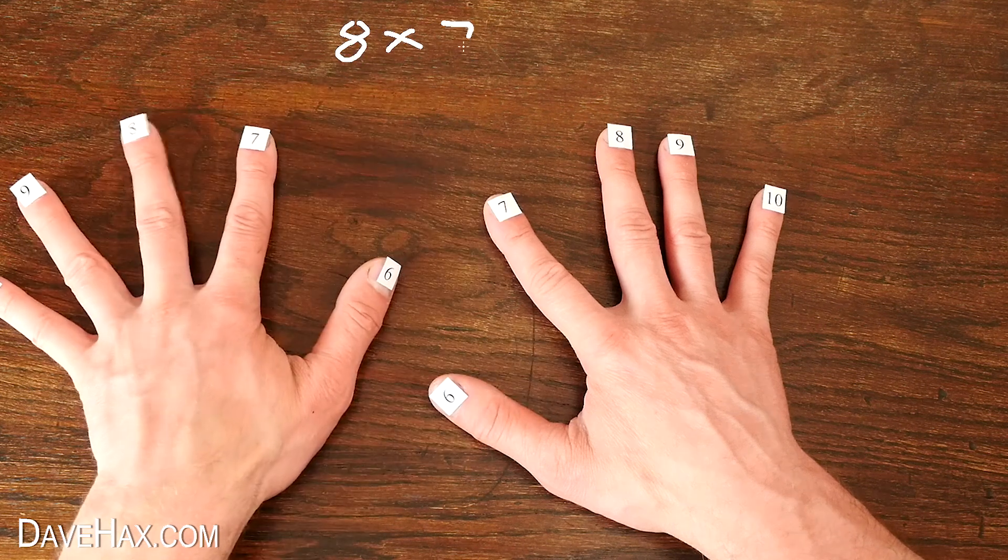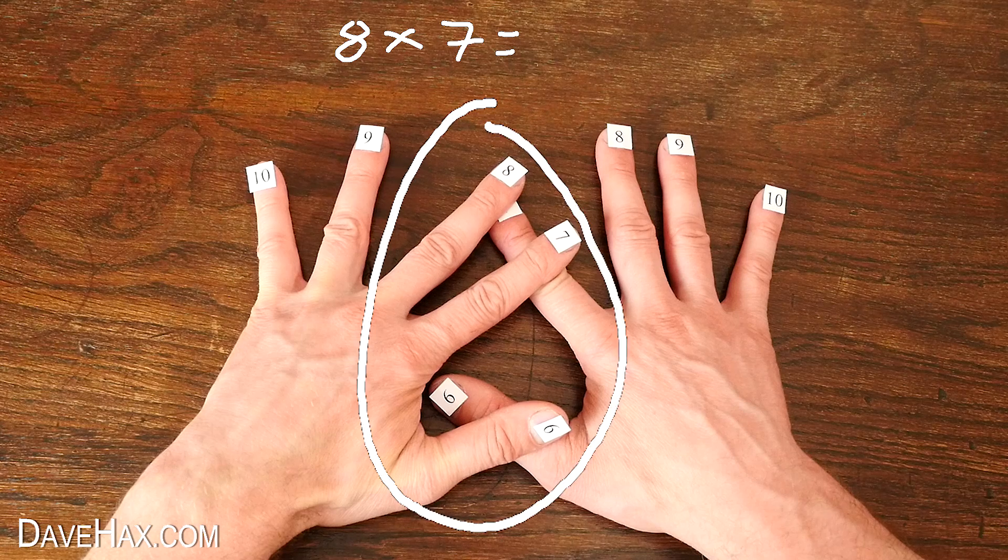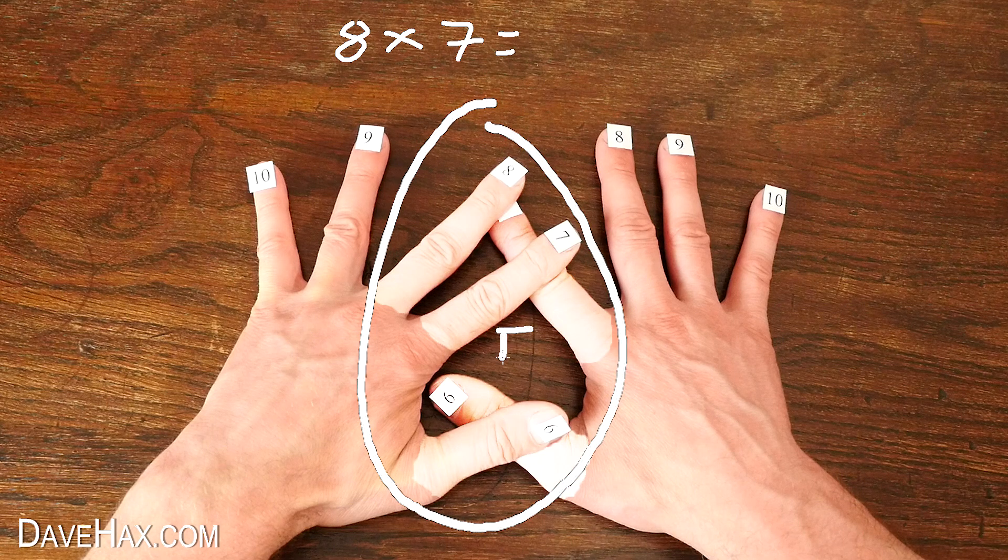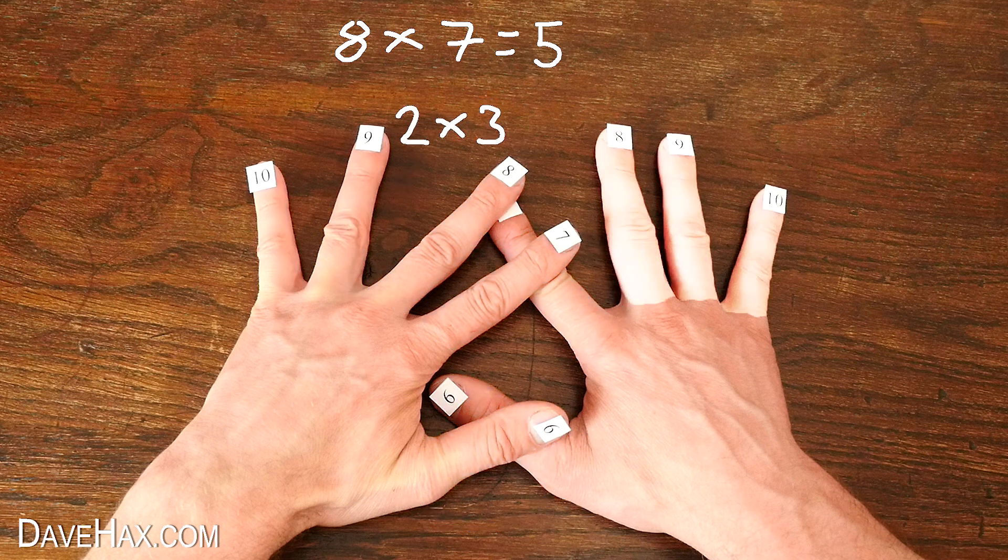If we want to do 8 times 7, we put digit 8 on the 7. Now our first digit is 5. And our second number is 2 times 3, which is 6. 56.